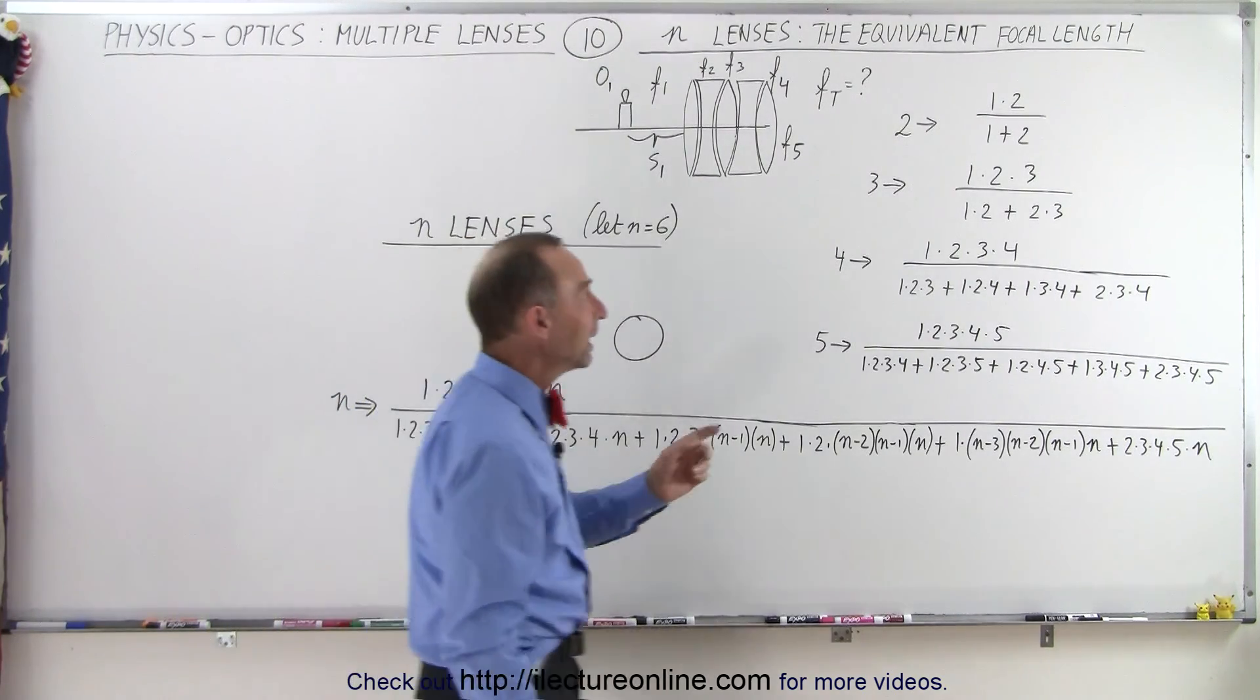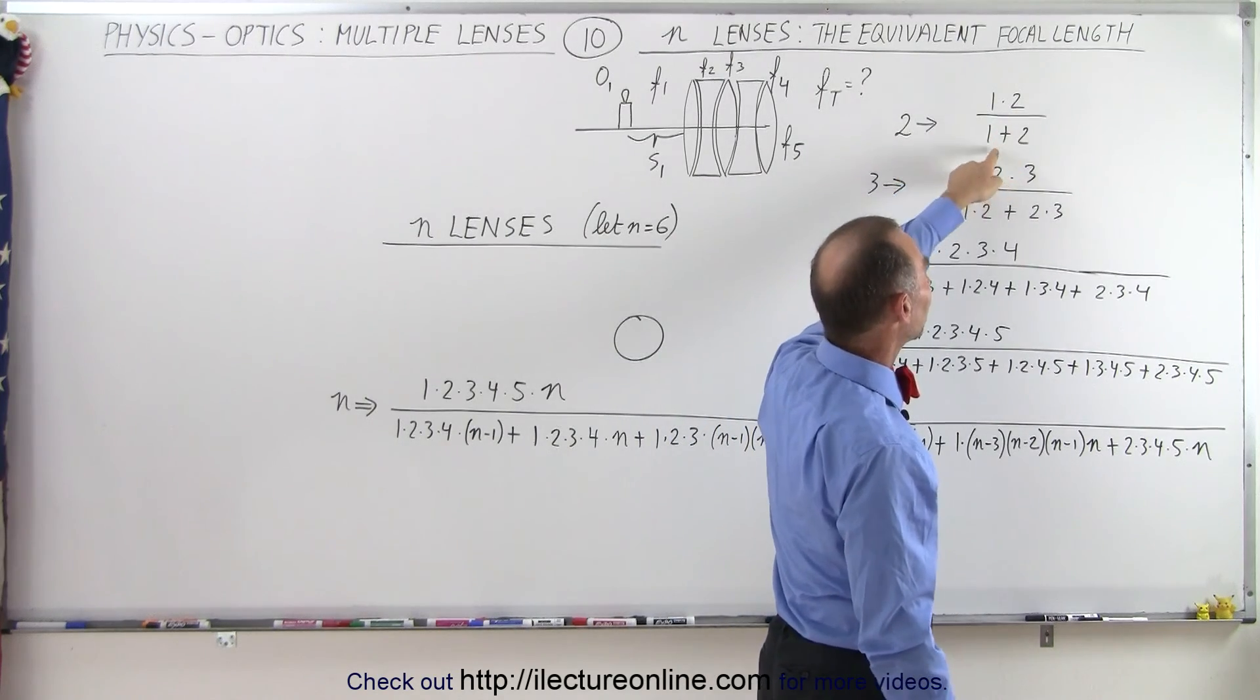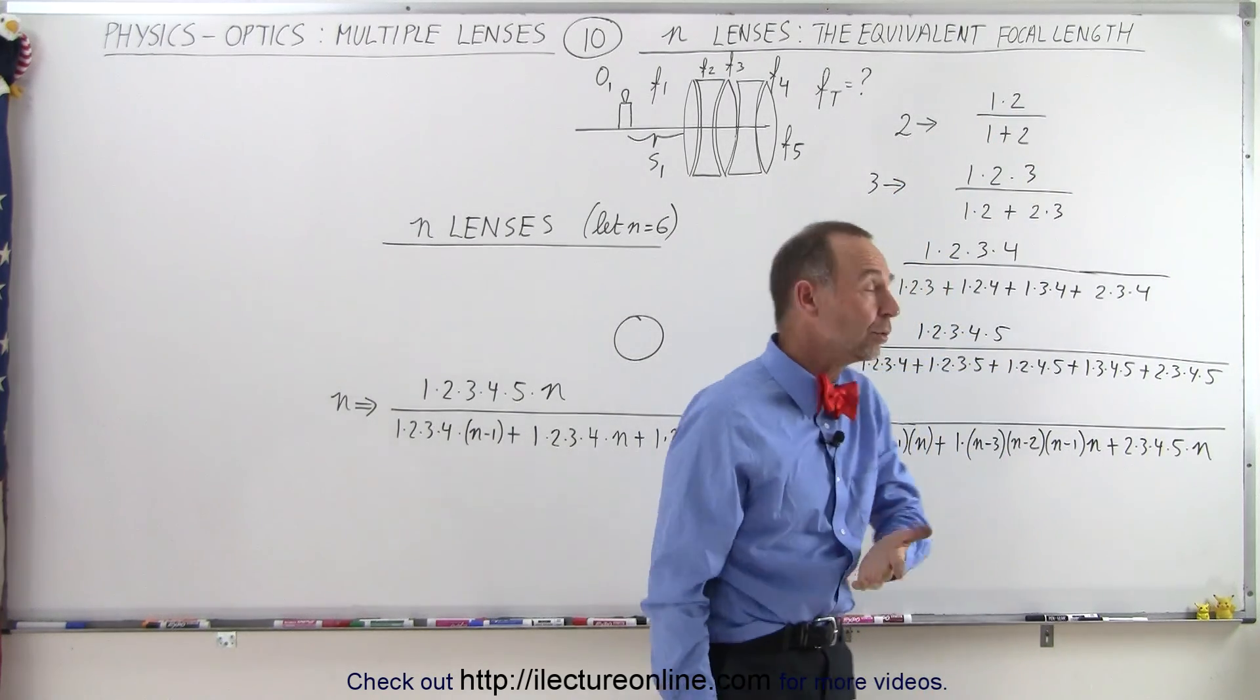So for two lenses, we take the product of the focal length of the two lenses and divide by the sum of the focal length of the two lenses.